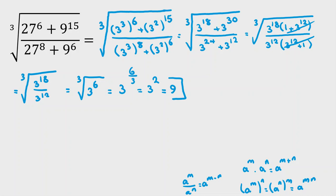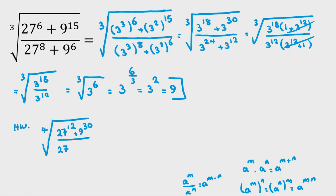As homework, try to calculate the 4th root of 27 to the 12 plus 9 to the 30, over 27 to the 100 plus 9 to the 138. Try to calculate this, simplify, and comment your answers right below this video.